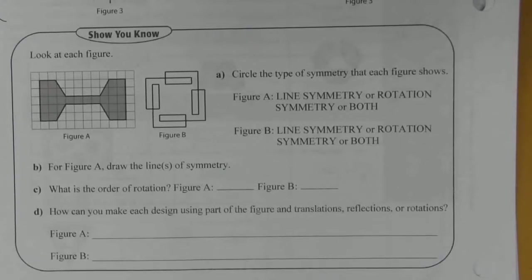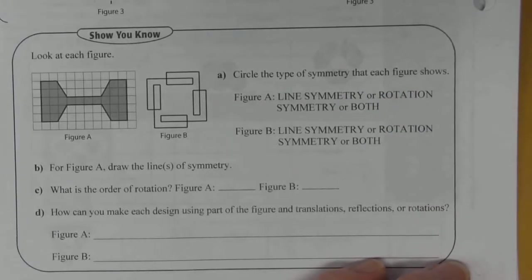We've got two figures, figure A and figure B. We need to assess them. Circle the type of symmetry that each figure shows.